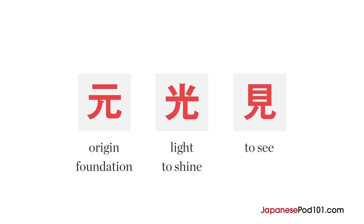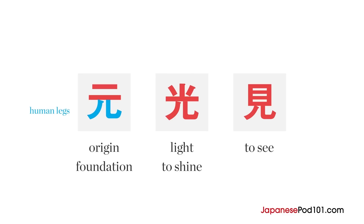If you think of these kanji characters from the viewpoint of support, the meaning of each character makes much more sense. The first kanji has the human legs radical at the bottom, which is connected to a wide horizontal line with a smaller parallel horizontal line on top. The wide horizontal line represents the body, and the smaller horizontal line represents the head. Notice how the legs are connected and are supporting the body. The legs supporting the body and head represent the foundation or basis, which is the meaning of this kanji character.